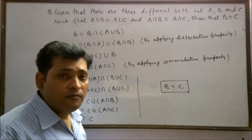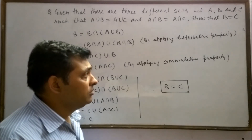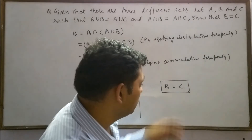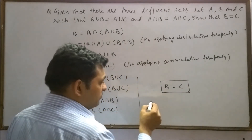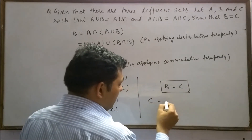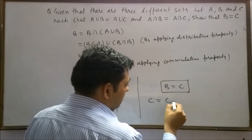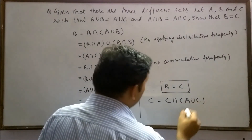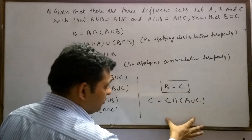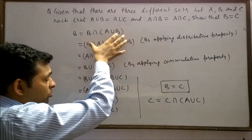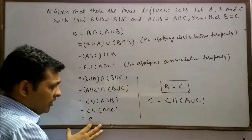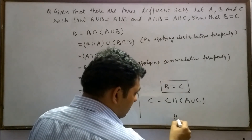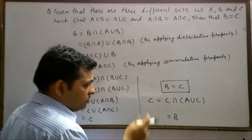We can also solve this question in an alternative way, and this is your homework. C can be written as C intersection (A union C). By using this result and following the same procedure, you will find that you can get set B, which will be equal to set C.